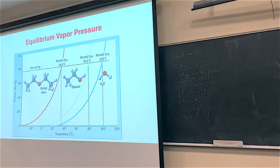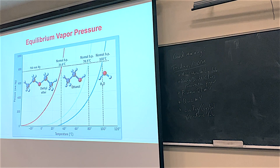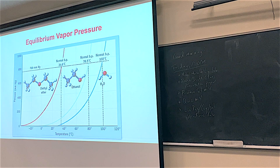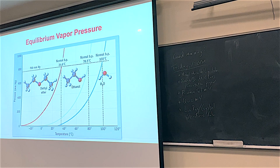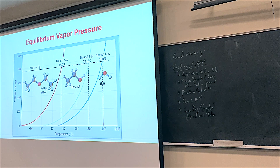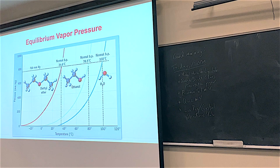Here's a vapor pressure graph showing three compounds — diethyl ether (red), ethanol (green), and water (blue). Notice that diethyl ether reaches its curve first, then ethanol, then water. Normally you might think that as molar mass goes up it would take more energy to get molecules into the gas phase — but that's the opposite of what we see here. Diethyl ether has the highest molar mass with four carbons and an oxygen, yet it has the highest vapor pressure.